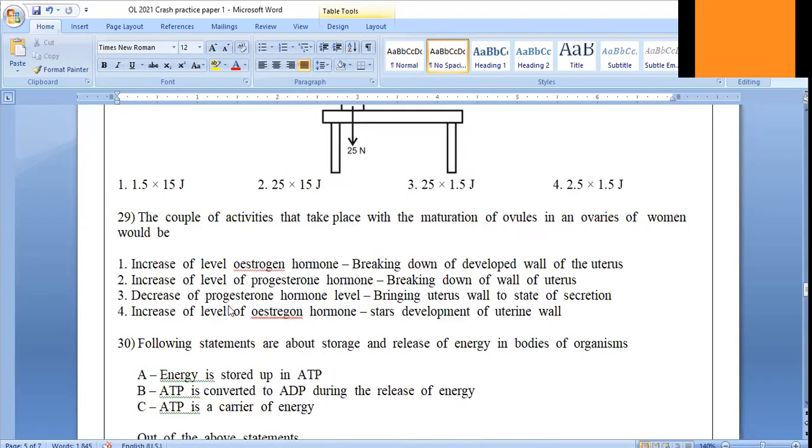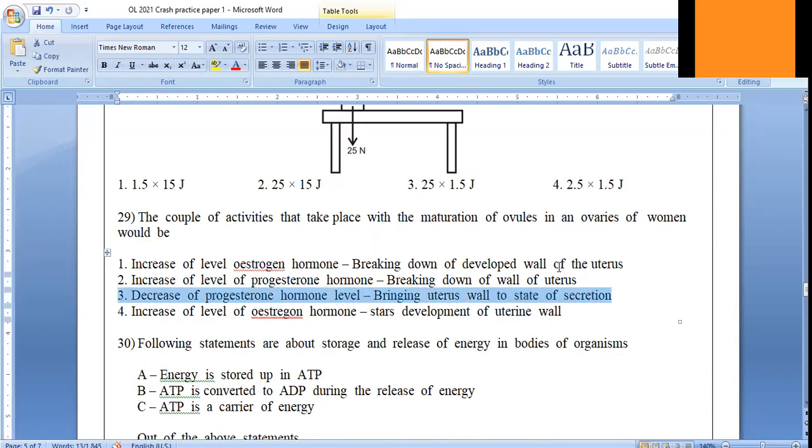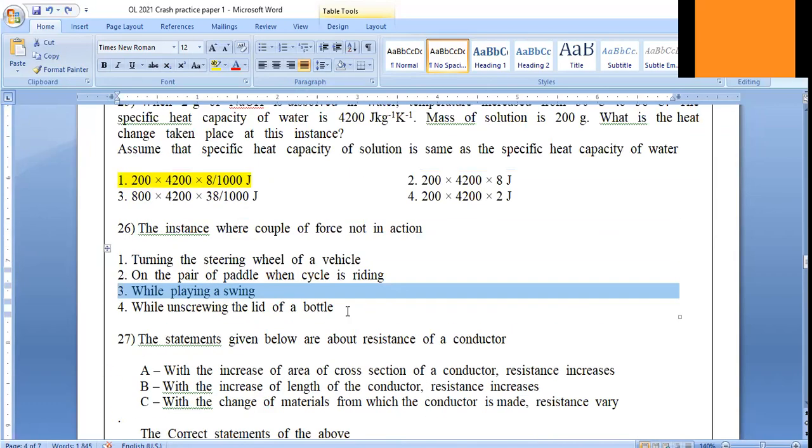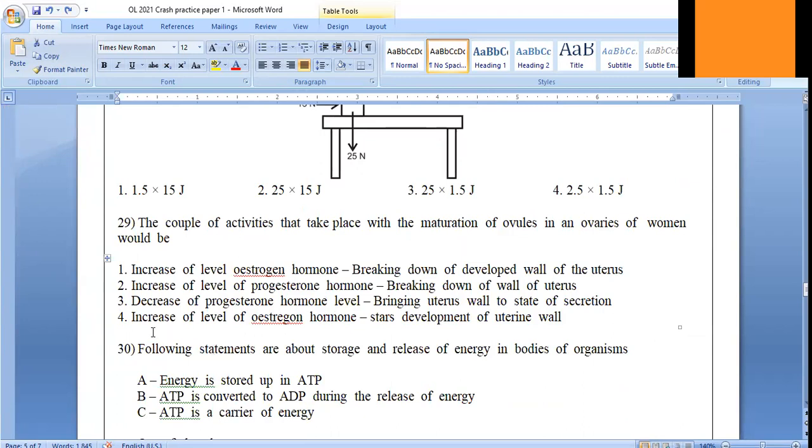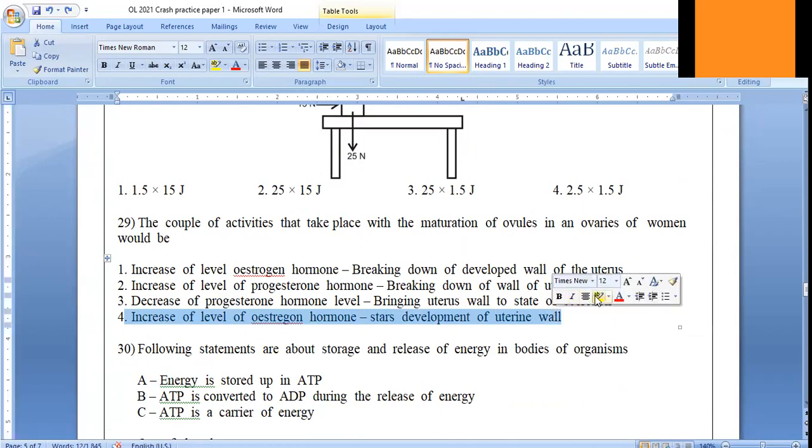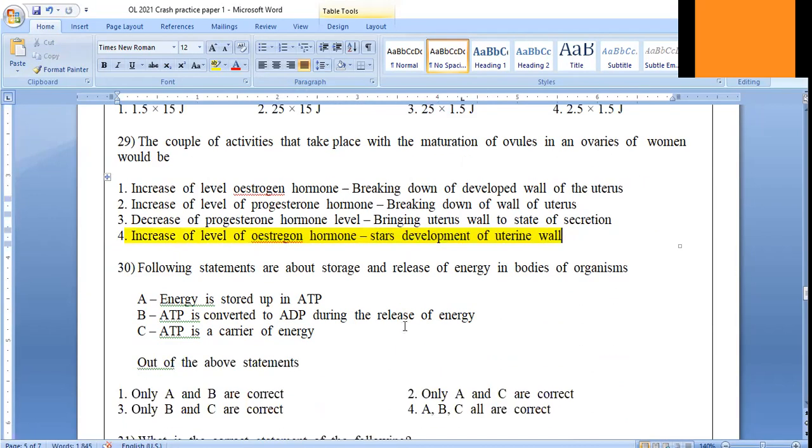Question number 29: human reproduction question. The simplest answer regarding the menstrual cycle - increase of the level of estrogen will start the development of uterine wall. So we selected that. You can check your textbook for that.